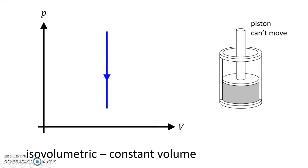But we could also have the line go down. That would be isovolumetric cooling. The environment is at a cooler temperature than the system, the gas. So heat exits from the gas. And as the heat goes out, the piston can't move, so the pressure drops.